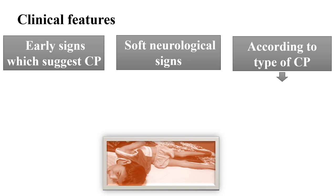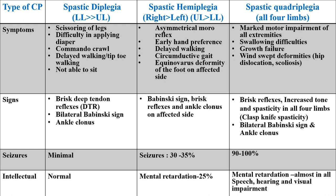In spastic diplegia, lower limbs are more affected than upper limbs. There will be scissoring of legs, difficulty in applying a diaper, and commando crawl where the patient drags the lower limbs. Delayed walking and tiptoe walking will be present. The patient will not be able to sit properly. Signs include brisk deep tendon reflexes, bilateral Babinski sign, and ankle clonus. Chances of developing epilepsy are minimal and intellectual function remains normal in almost all cases of spastic diplegia.